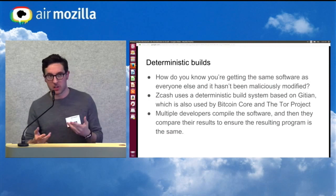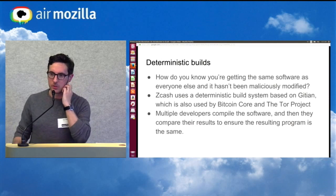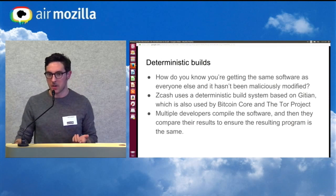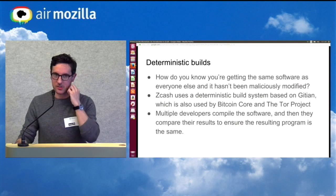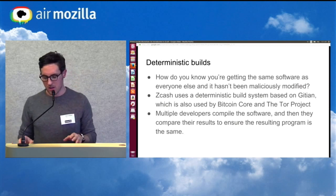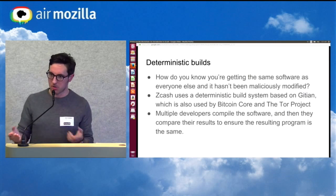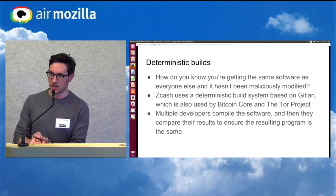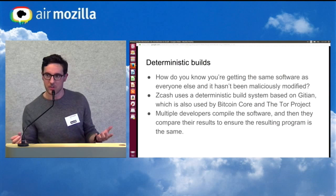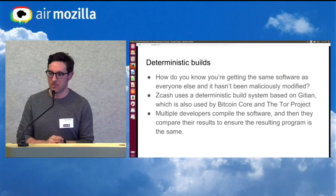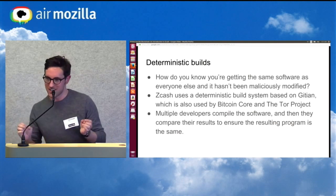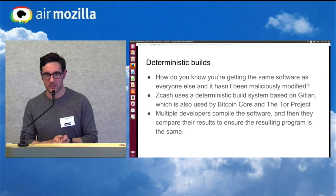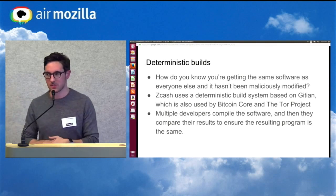Another thing I worked on personally is deterministic builds. A big problem in software development that I think not enough people talk about is: how do you actually know you're getting the same software as everyone else and it's not being maliciously modified? Zcash uses a deterministic build system. When developers compile programs, the main source of indeterminism in the software is usually timestamps — like, 'I created this program at a certain time.' To remove indeterminism, you want to essentially strip it of timestamps and so on.